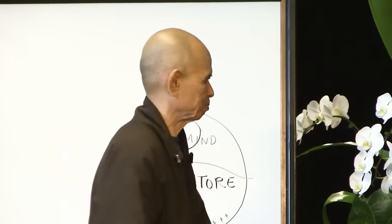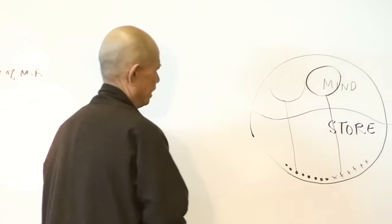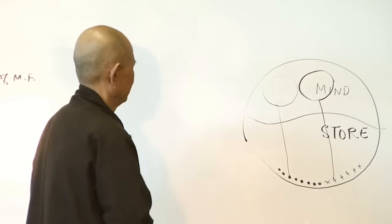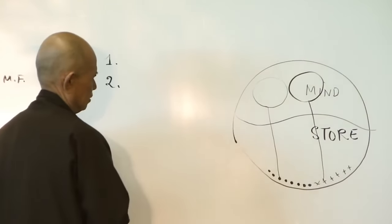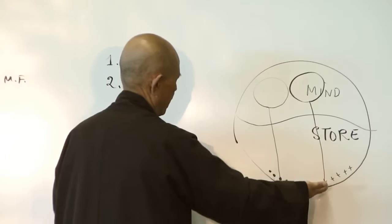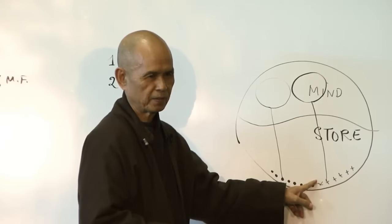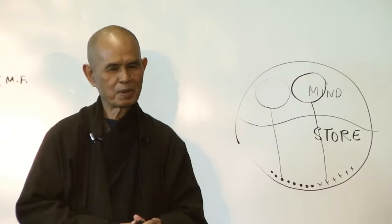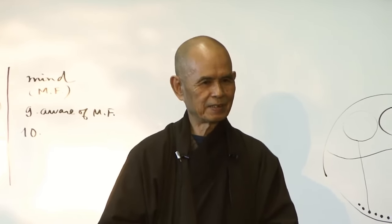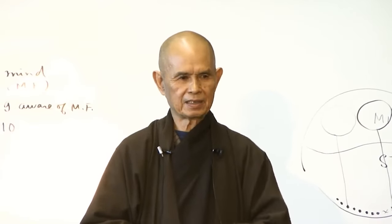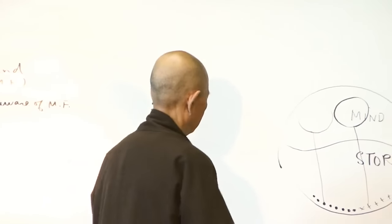So the first aspect is that the negative seeds down here — don't give them a chance in yourself and in the other person. And the second aspect is that if one of them happens to manifest, try to help it to go back as soon as possible. Because the longer it is up here, the bigger it will grow down here at the grassroots level. There are people who are very angry, but ten years ago they were not angry like that, because the seed of anger in them has been watered every day by themselves and by their friends. So that is why not watering the negative seed is a practice.